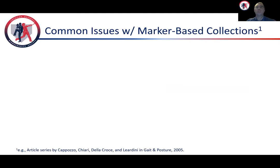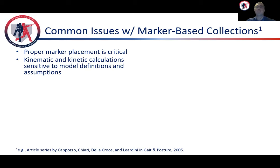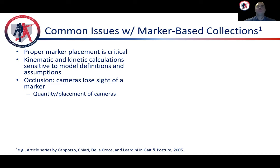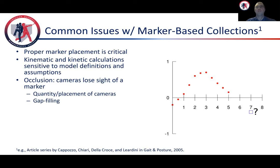So what are some common issues that a biomechanist may encounter with marker-based motion capture? First, proper marker placement is critical, as both marker placement and model definitions can affect biomechanical calculations. Another large issue is occlusion, or basically the camera losing sight of a marker and not knowing its location for select frames of data. This can be reduced by optimizing the placement and number of cameras in the system. Furthermore, there are mathematical techniques in most motion capture software that can be used to fill gaps in data, but you do need a detailed understanding of the motion you have captured in order to make sure that you do not fill the gaps incorrectly.